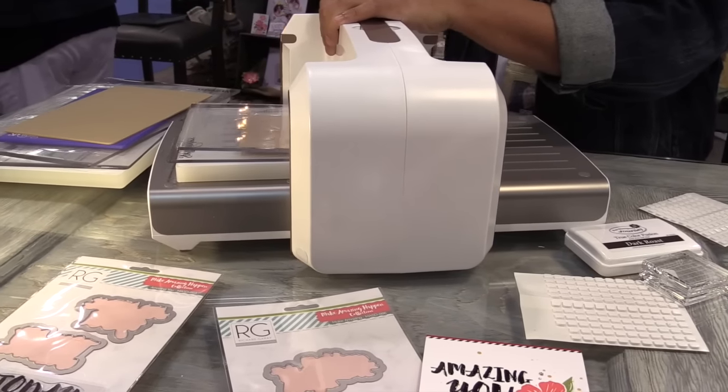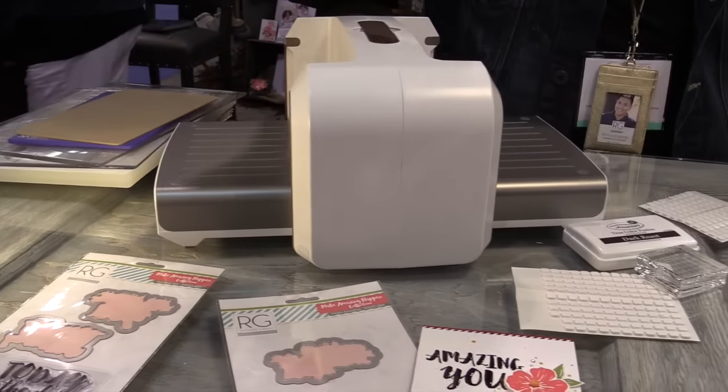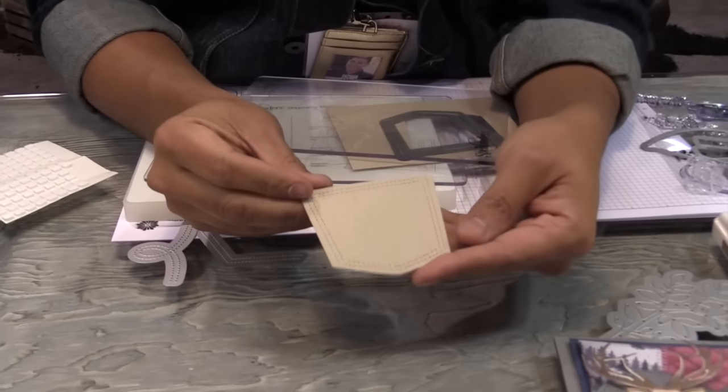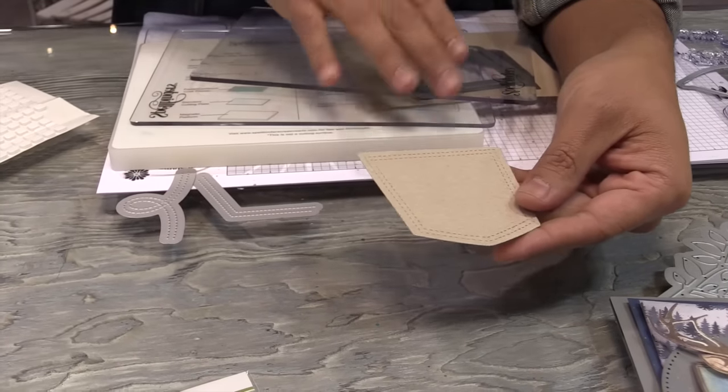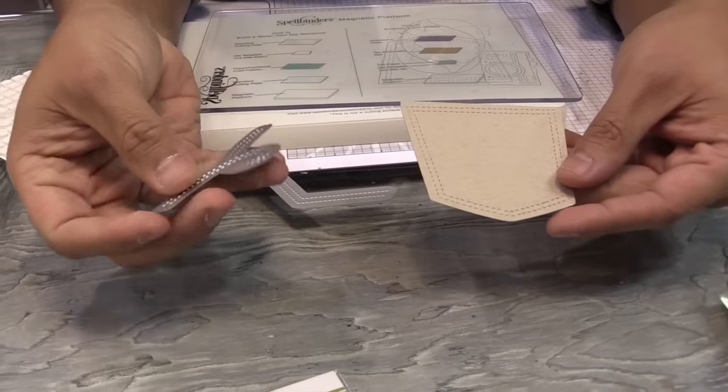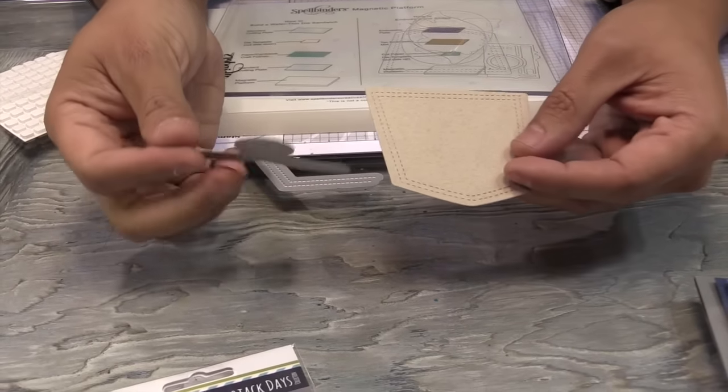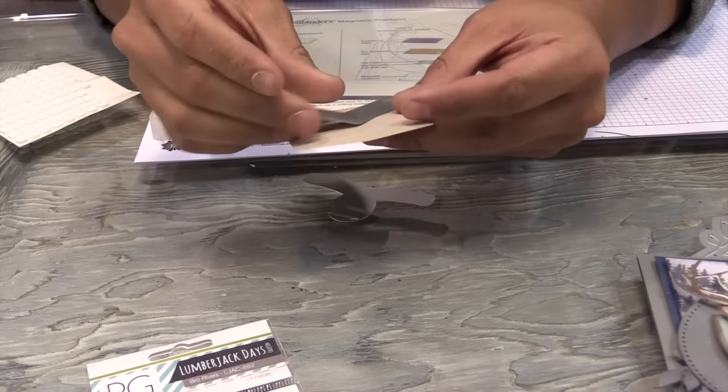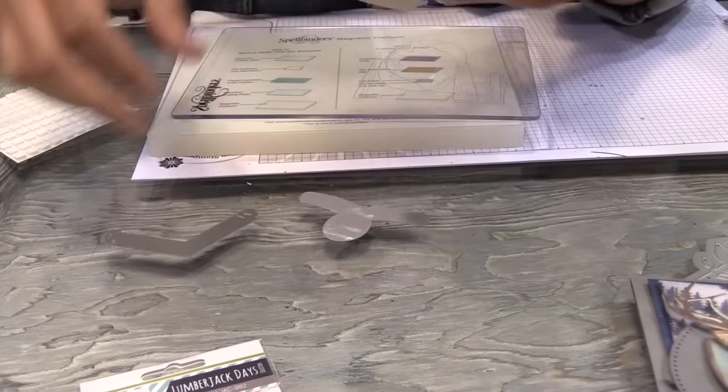Now what's extra fun with this particular die set is that I have some options. Now that I've created my stitched pocket, which is so adorable, I can come back and add some decorative elements. So I have a couple of decorative elements to choose from. I've got this Wrangler-like jean pocket or I've got a cowboy stitch that I can come back and add.